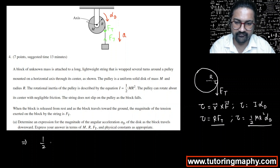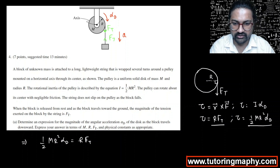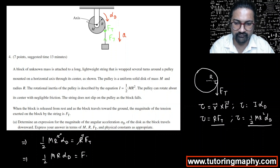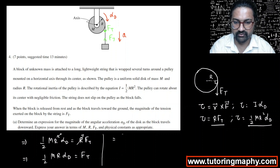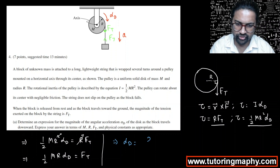Setting the two torque expressions equal: (1/2)MR²·α_d = R·F_T. The R cancels from both sides, leaving (1/2)MR·α_d = F_T. Rearranging gives us α_d = 2F_T / (MR). So this is the expression for the angular acceleration of the pulley.